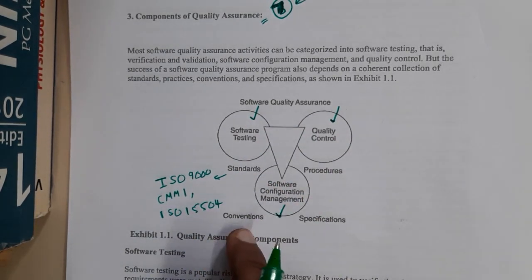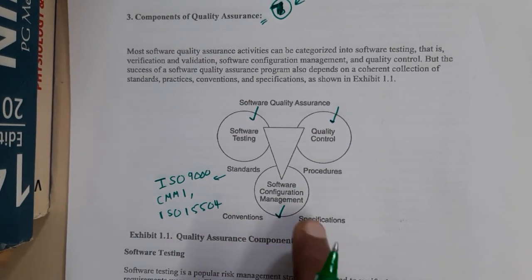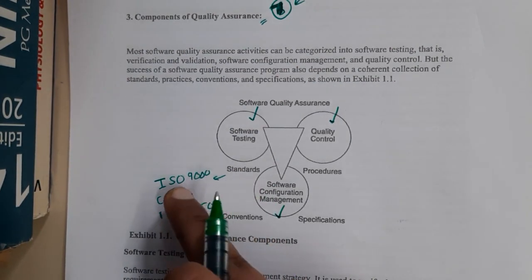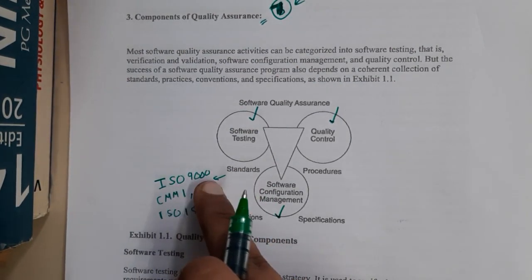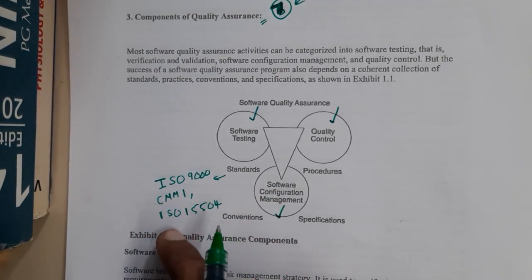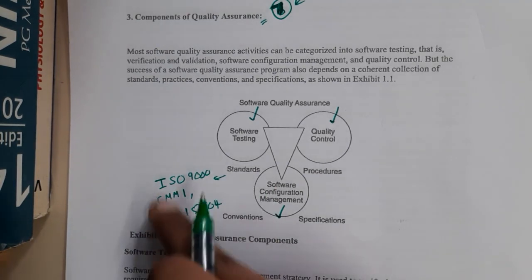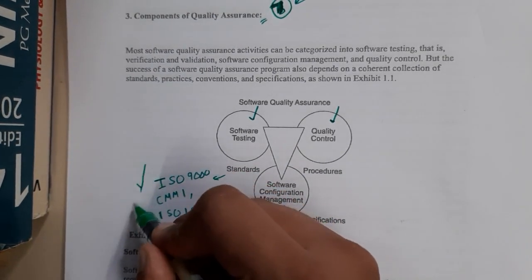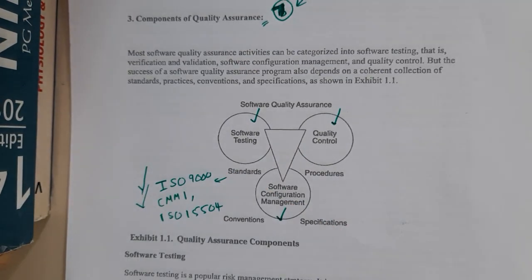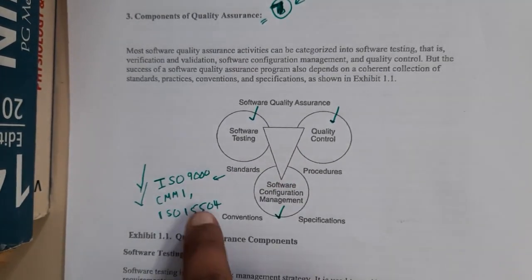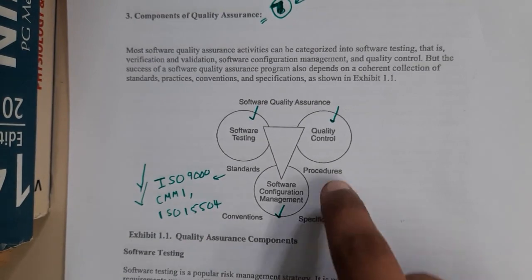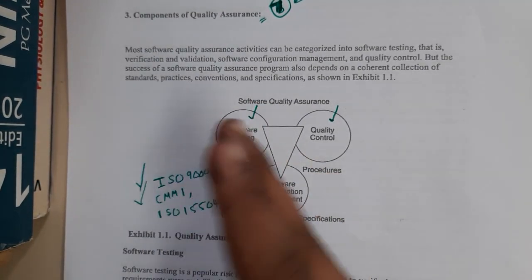So this is a small diagram showing standards, procedures, conventions, and specifications. Basically, what are standards? We have ISO 9000, the CMMI model, and ISO 1554 — these are some models. We'll be discussing about ISO 9000 and CMMI in detail.